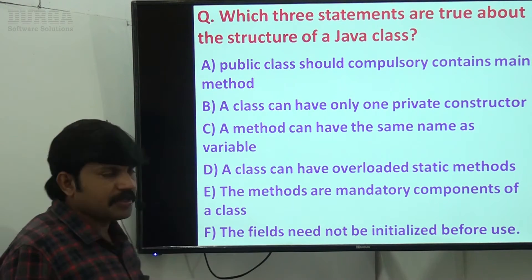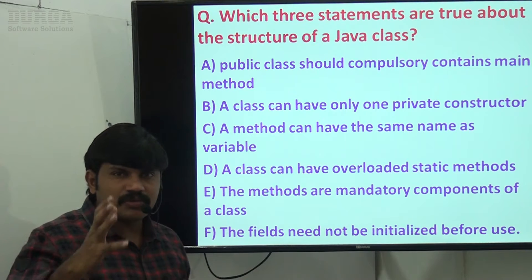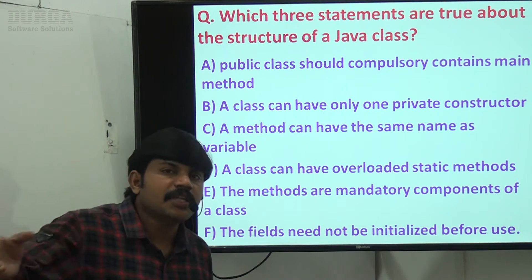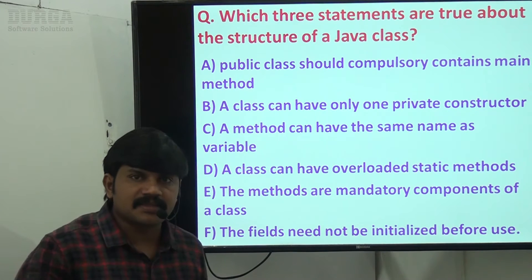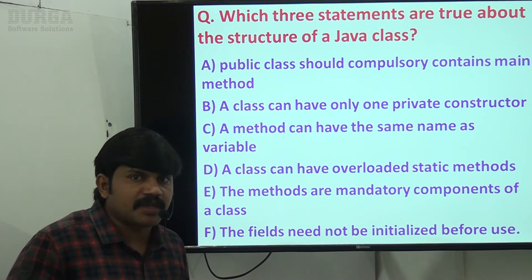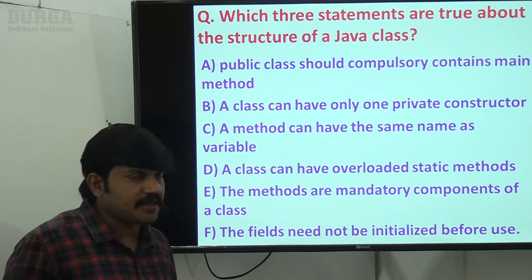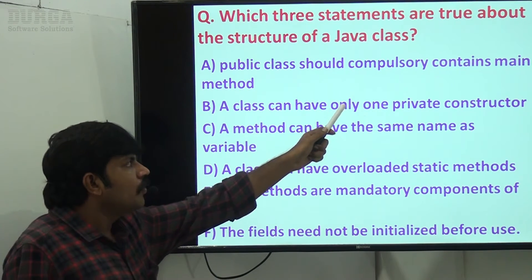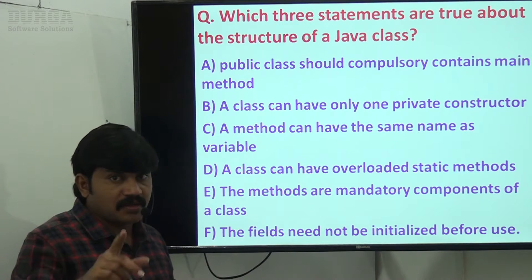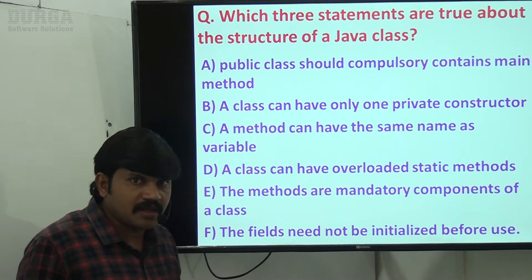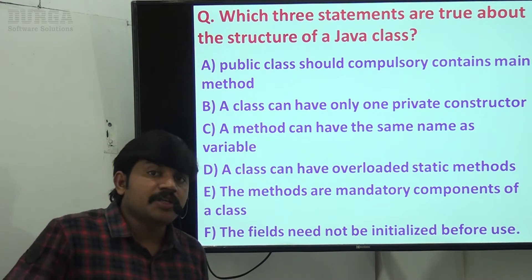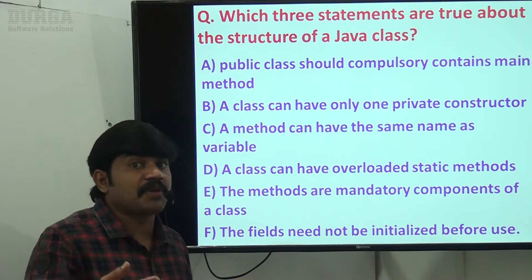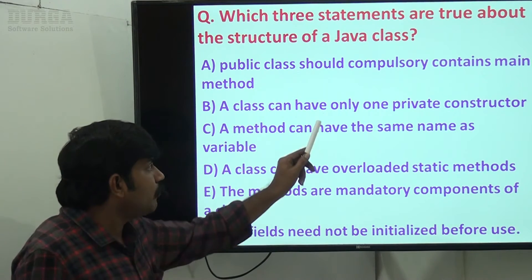First statement: a public class must compulsorily contain a main method — that's wrong. A public class means any person can access it, but it is not required to contain a main method. Second statement: a class can have only one private constructor — that's also wrong, because a class can contain any number of constructors, and all of them can be private.